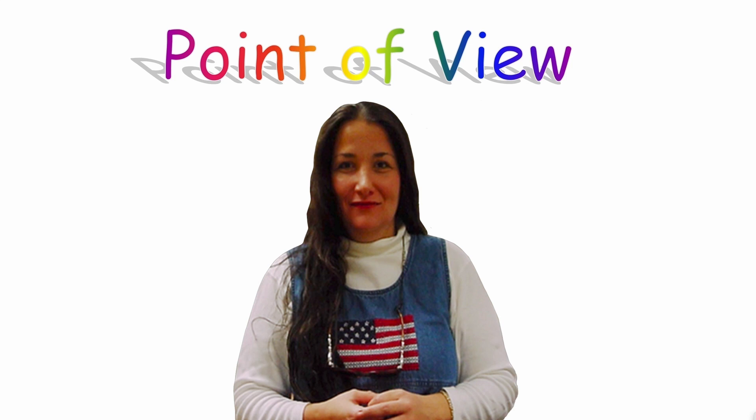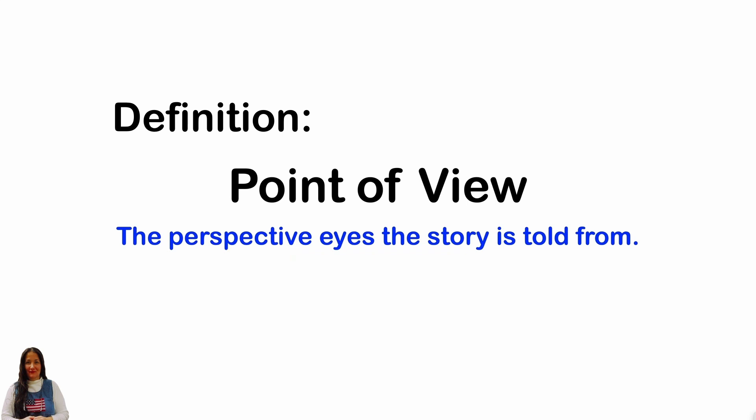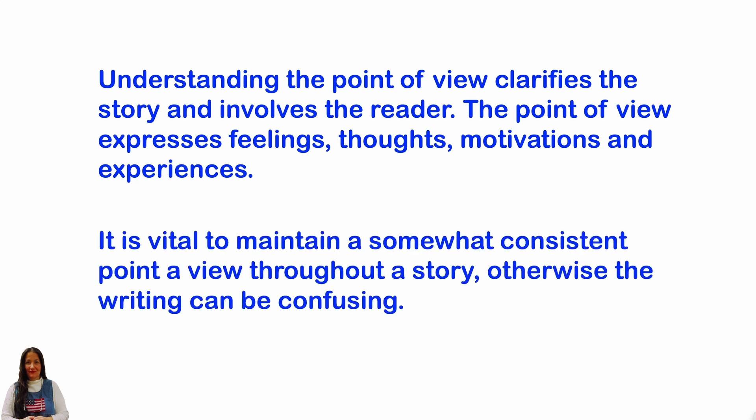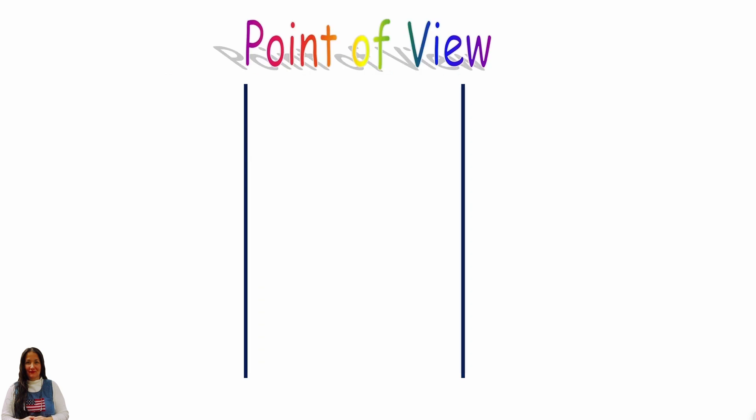In this lesson, we're going to be reviewing all the types of point of view from literature. This is really important because point of view keeps the story going — with no point of view, the story wouldn't be told. Point of view is the perspective eyes the story is told from. Understanding point of view clarifies the story and involves the reader. It expresses feelings, thoughts, motivations, and experiences. It is vital to maintain a somewhat consistent point of view throughout a story; otherwise, the writing can be confusing. I'm going to briefly show you the types of point of view, and then we're going to be reviewing them.